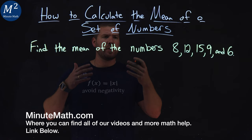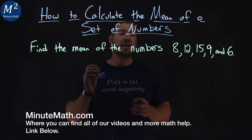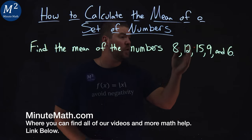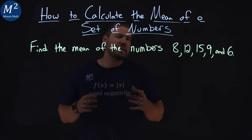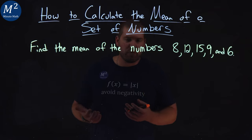We're given this problem here. We want to find the mean of the numbers 8, 12, 15, 9, and 6. Well, the mean is also kind of known as the average.